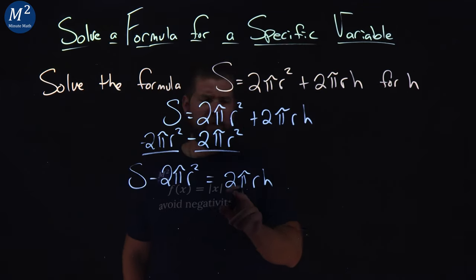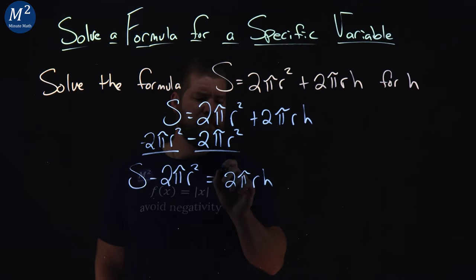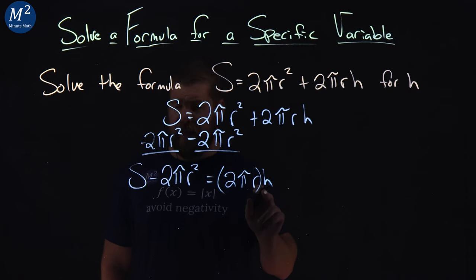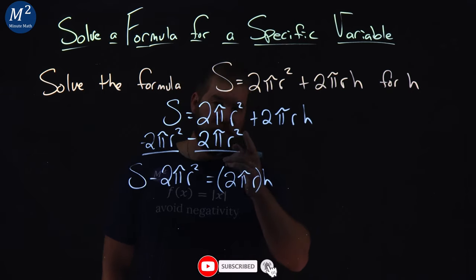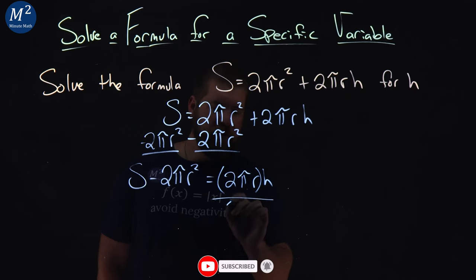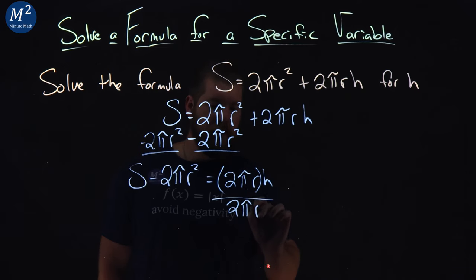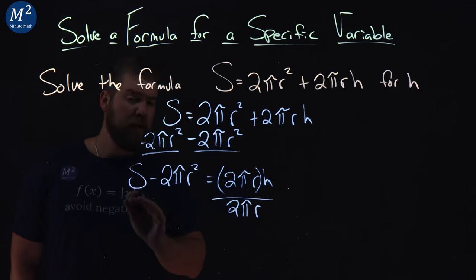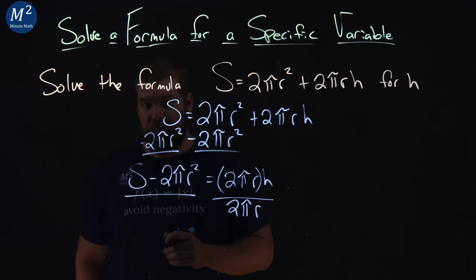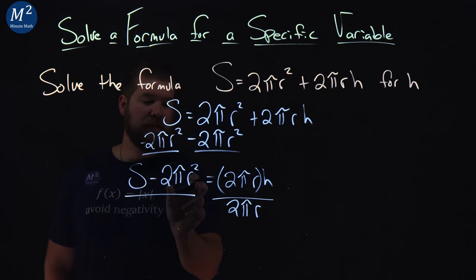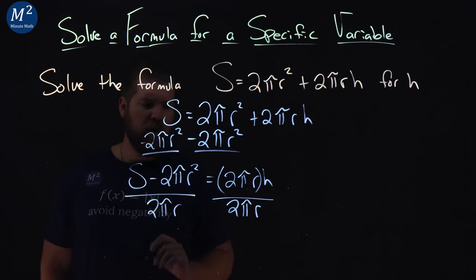Now I have 2πR being multiplied by H. The opposite of multiplication is division, so I'm going to divide both sides by 2πR. Be careful with the left-hand side - it has to be everything on the left-hand side. A common mistake is students will apply it to just the first part. Can't do that.